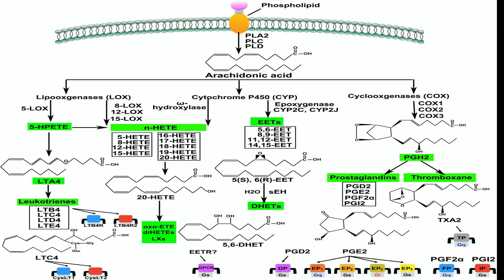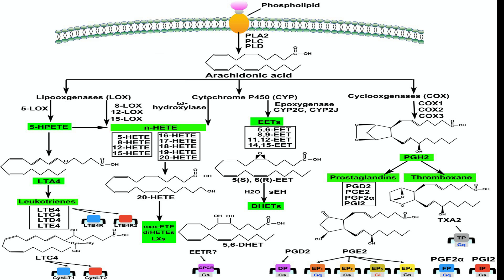Arachidonic acid, a polyunsaturated fatty acid, is the key player in various biochemical pathways leading to the formation of important bioactive derivatives. Upon cellular stimulation, arachidonic acid is released from the phospholipid layer of cell membranes by the action of phospholipase A2. The freed arachidonic acid can then follow one of three main pathways.